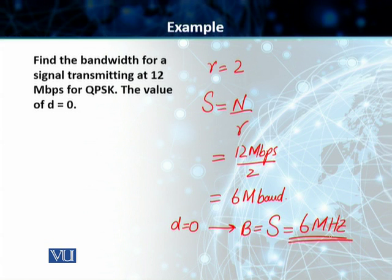So in the case of quadrature PSK, we have reduced the bandwidth to half of the bit rate, which is 12 megabits per second, and we have reduced it to 6 megahertz per second, and it is proportional to our signal rate as well.